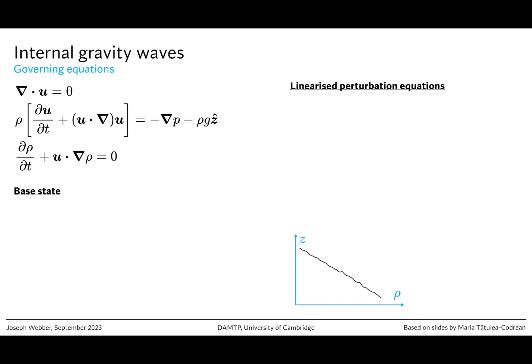Internal gravity waves are important in a number of different geophysical contexts, and their existence is dependent on the existence of something known as a stable density stratification. A stable density stratification is exactly what it sounds like - if you have different density fluids, you've got the most dense fluid at the bottom and the least dense at the top. This makes sense. This is a stable situation. If you had more dense fluid on the top, it would sink and it would be unstable.